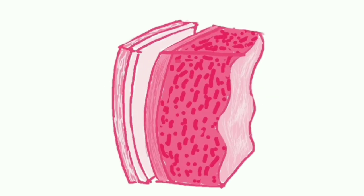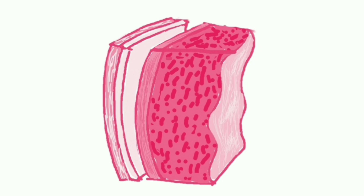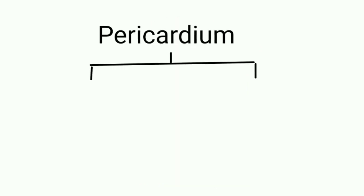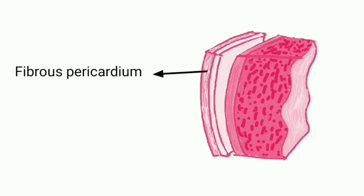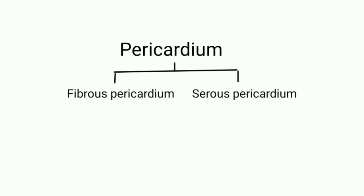Pericardium: the heart is surrounded by a double-layered membrane called the pericardium. It is made up of two main layers: a tough external layer known as the fibrous pericardium, and a thin internal layer known as the serous pericardium. The fibrous pericardium is made up of tough connective tissue and is relatively non-distensible. The serous pericardium is enclosed within the fibrous pericardium.